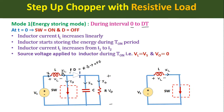In Mode 1 operation, switch SW is ON while diode D is OFF. Since diode D acts as an open circuit, the load is disconnected from the source. A current starts flowing in the inductor loop — this is the inductor current iL. Since the inductor is an energy-storing device, it starts storing energy during the ON period of switch SW, and the inductor current iL increases linearly from a minimum value i1 to a maximum value i2.